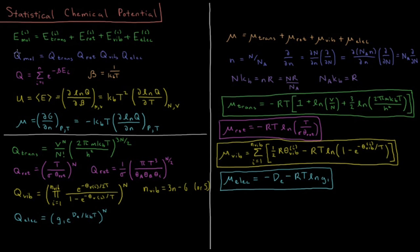For our partition function of the molecule, that's equal to a product of the partition function of its translational motion times the partition function of its rotational motion times the partition function of vibrations times the partition function of its electronic state. The partition function is also defined as a sum over all the individual energy states of a molecule of the Boltzmann factor of that state, e to the minus beta E_i, where beta is 1 over the Boltzmann constant times the temperature of the system.